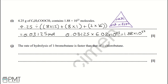Part J: the rate of hydrolysis of 1-bromobutane is faster than that of 1-chlorobutane. The reason is that the carbon-bromine bond is weaker than the carbon-chlorine bond. To get the mark you must state that the carbon-bromine bond is weaker.